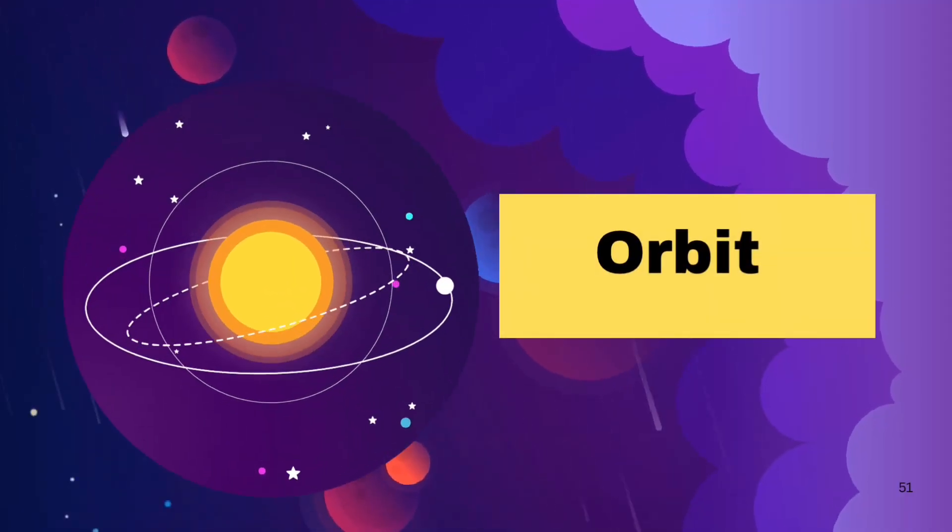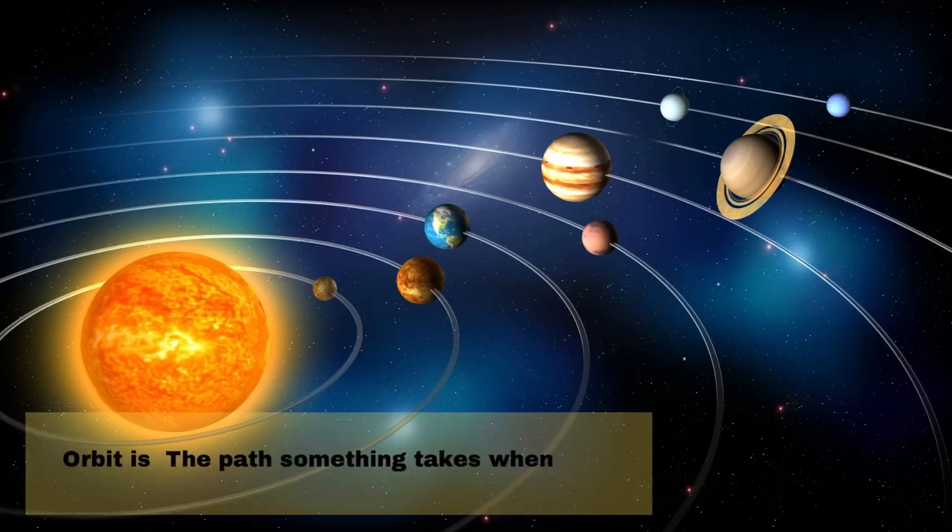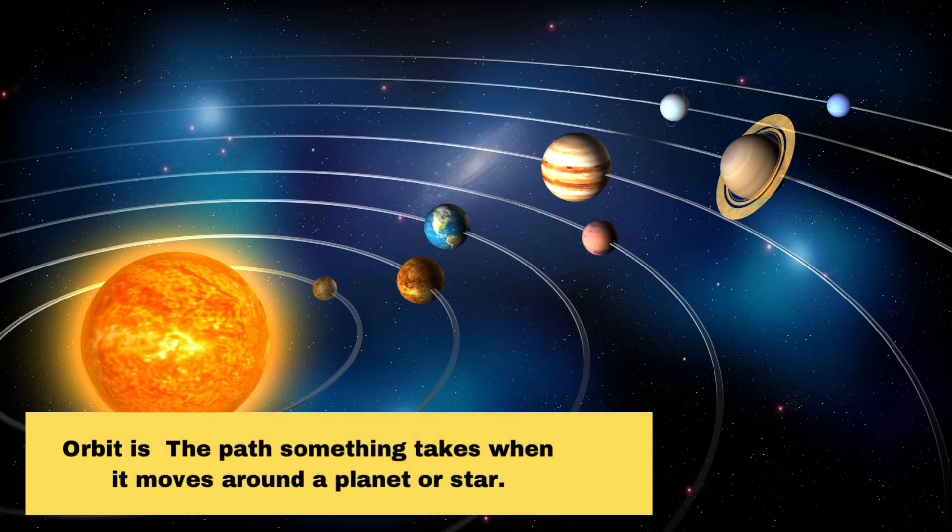Orbit. An orbit is the path something takes when it moves around a planet or star.